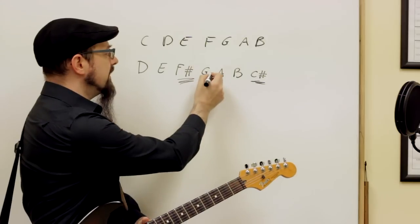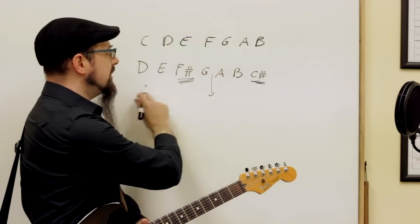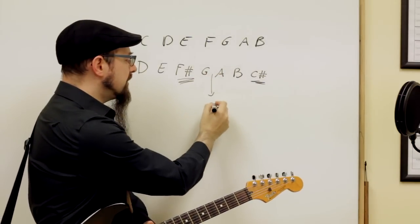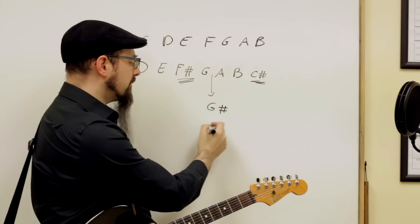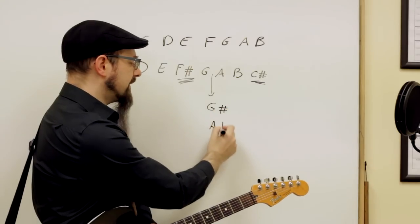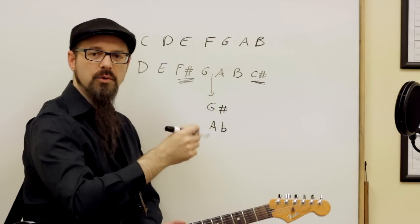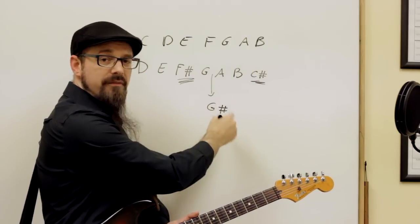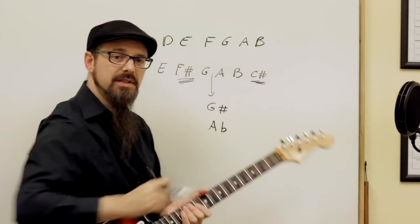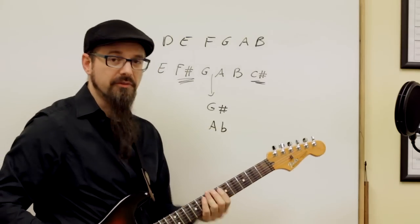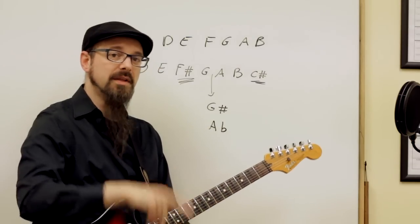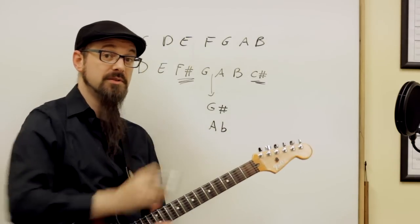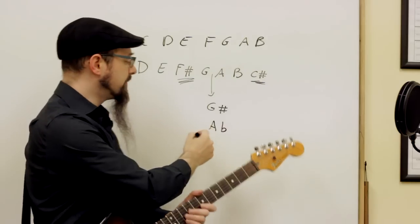For instance, if I want a note between G and A in a D major scale, I could call it either a G sharp or an A flat. In our 12-note equal temperament, those two have the same frequency and are played the same way on the fretboard and piano, but your brain still interprets them differently, as you're going to see.